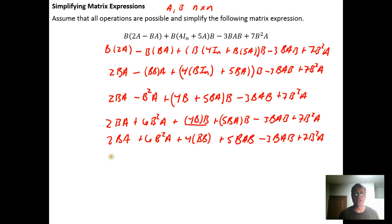We'll do this in two more lines: plus the 6B²A plus 4. This is B² because B is a square matrix. B times B is B² if B is a square matrix. Plus we got the 5BAB minus 3BAB, those could have been combined right there, 7B²A. Now we want to look and say can we combine anything else.